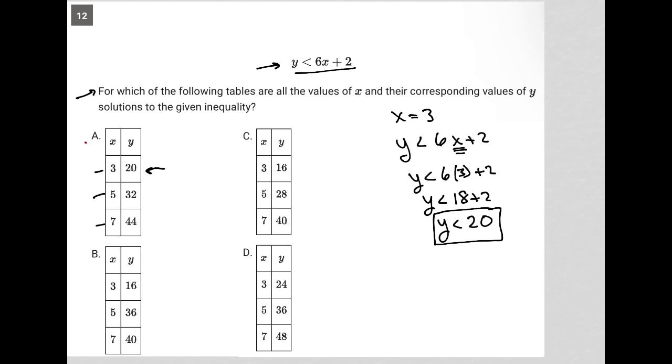For choice B, 16 works because that's less than 20. For choice D, 24 is not less than 20, so choice D is gone. So we chose one number and got down to 50-50. We're between B and C as our correct answer.